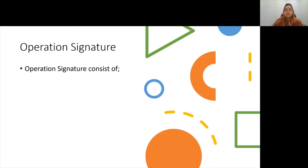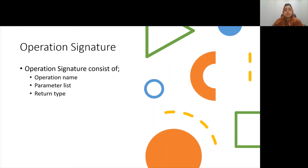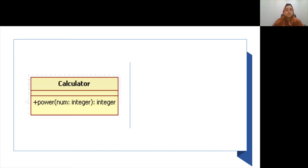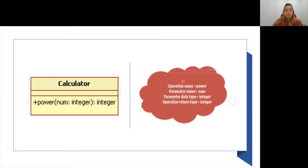The name, parameter list, and return type of an operation are collectively known as its signature. It is possible to have several operations with the same name and return type in one class, provided each has a different parameter list — just like overloading. Knowing the operation signature provides a clear specification for collaboration. For example, here is a power operation in a calculator class: visibility is public, return type is integer, and it takes a number parameter of type integer.